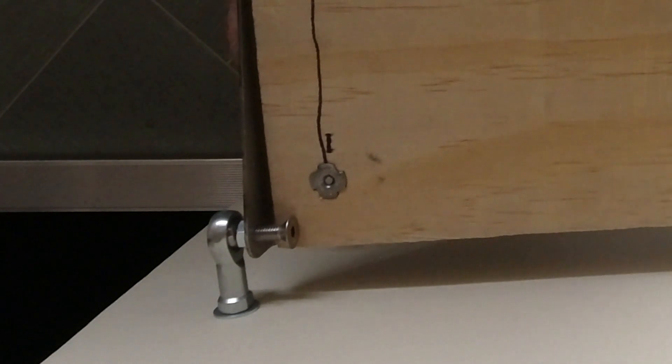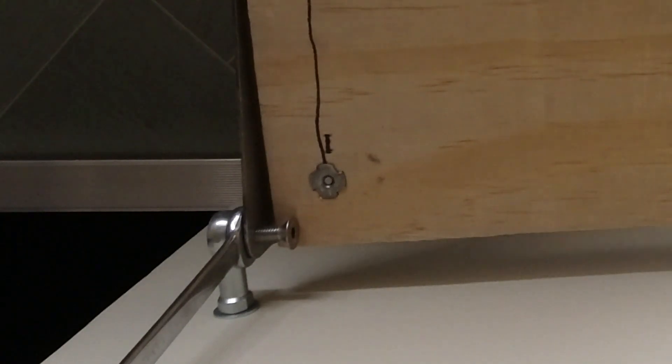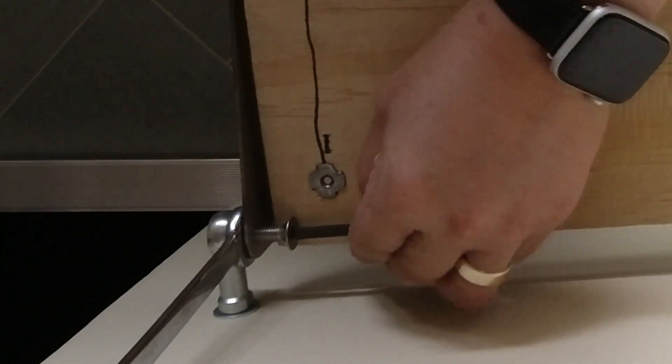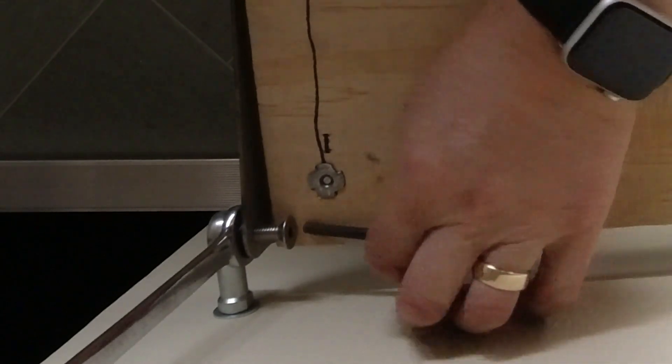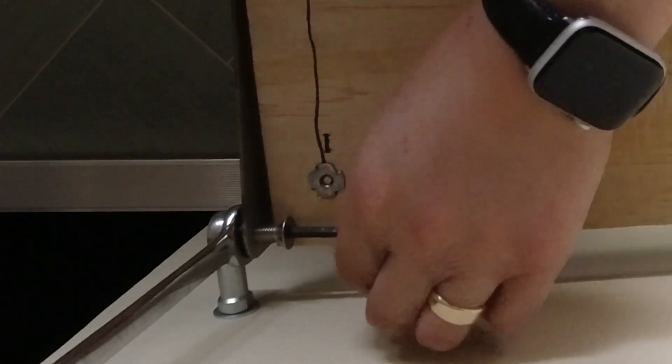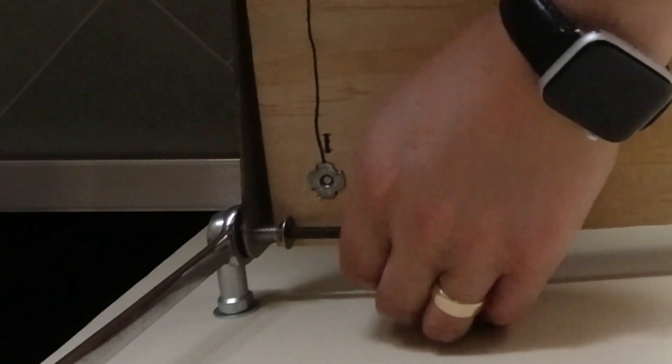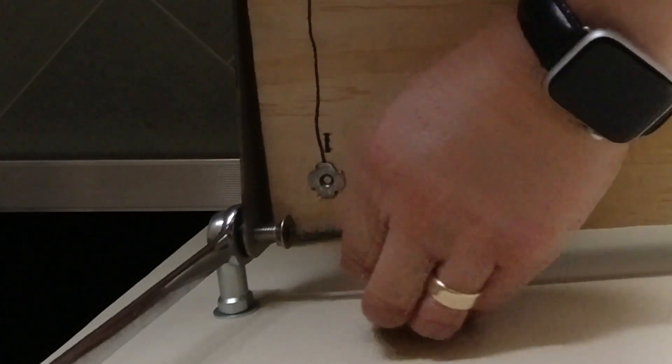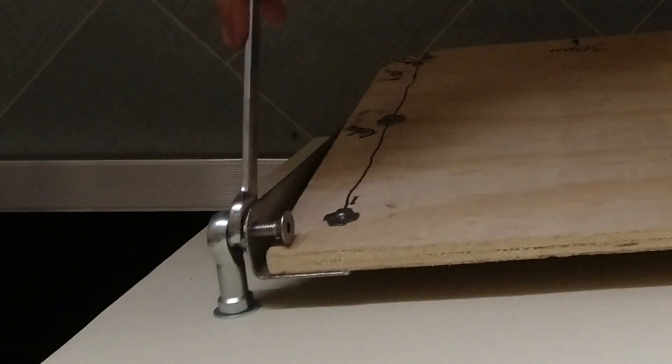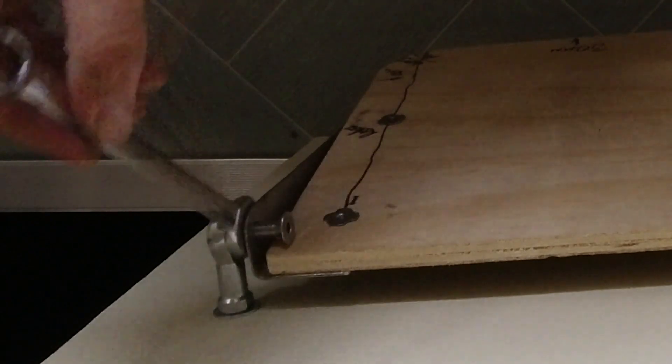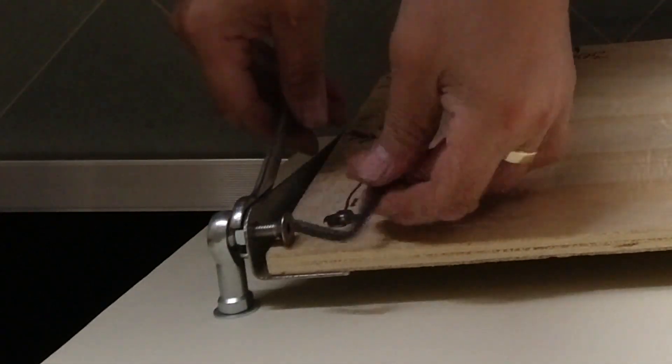Then we use a spanner on there and an allen key on here to tease this through the hole. As soon as it's in a little way like so, it's self-supporting and it can't escape. So let's just put that on there.